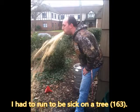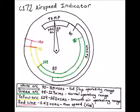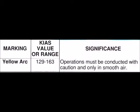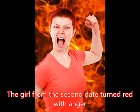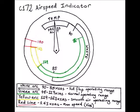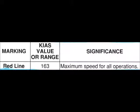I had to run and be sick on a tree — 163. I saw the prostitute from the first date, who was like, hello. Hello rhymes with yellow, so just think 163 is the top of the yellow arc. Then the girl from the second date turned red with anger, which represents our red line, because I was still being sick on a tree. So just think 163 again — your red line.